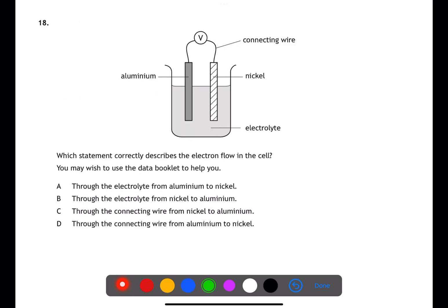Question 18 is looking at electrochemical cells and electron flow. Electrons flow through the wires, so we can eliminate A and B as answers. Electrons flow from the more reactive to the less reactive metal. Use page 10 of the data book to help you. It will go from aluminium to nickel. Therefore, D is the answer.